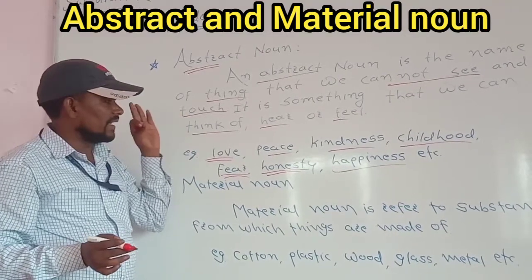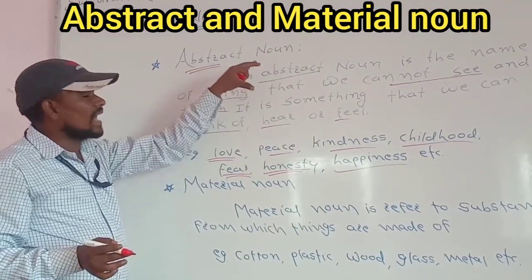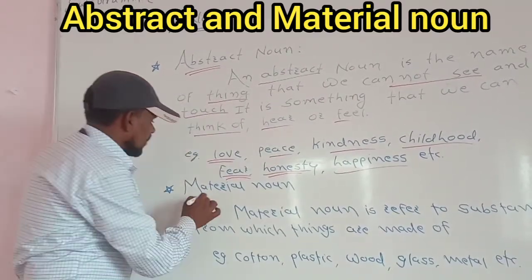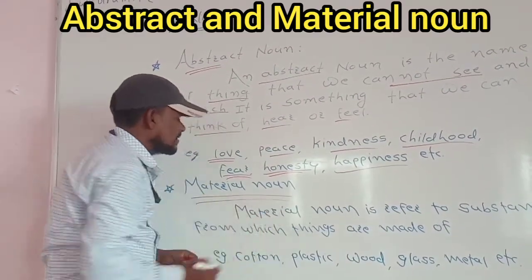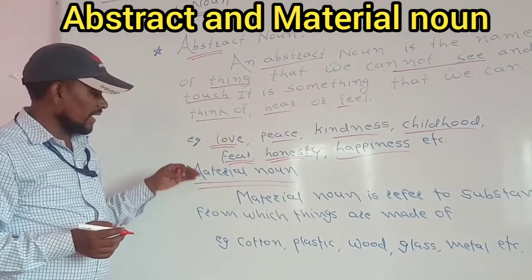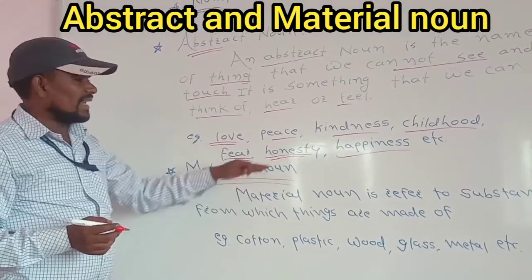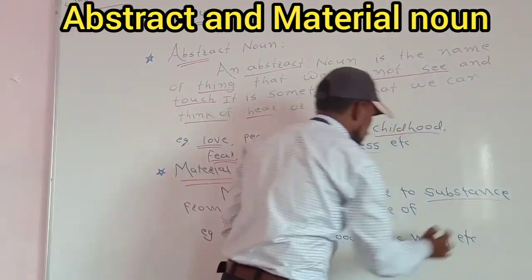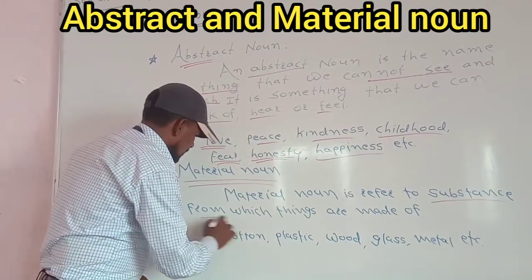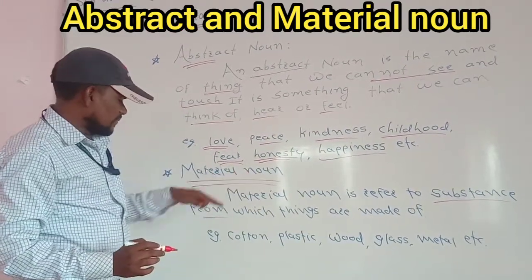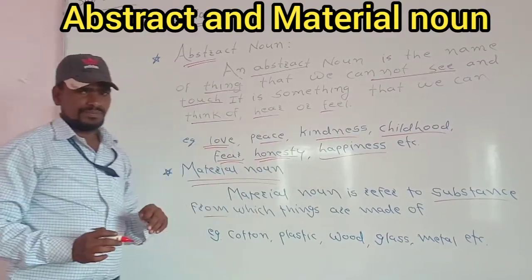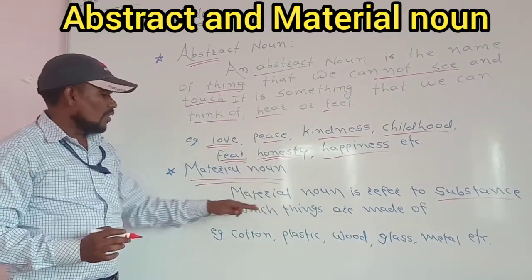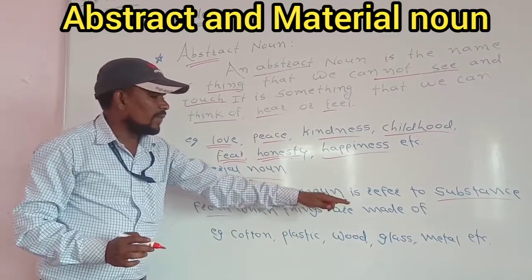Now about material noun. A material noun refers to a substance — it is a reference to a substance from which things are made of. Material noun is the reference to a substance from which things are made of.